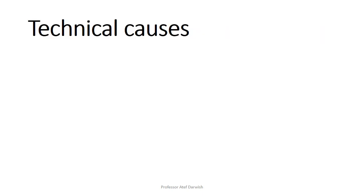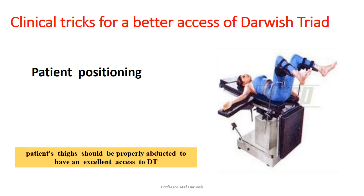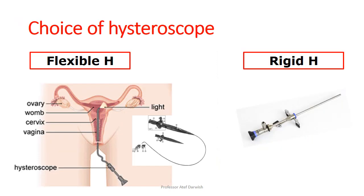Another important issue involves technical causes that may prevent you from reaching the triad. The first is patient positioning. We usually use the dorsal lithotomy position for hysteroscopic examination, but for access to the Darwish triad you should make a little more abduction of the thighs, because you are concentrating on the cornual ends — going on the right side to reach the left cornua and the left side to reach the right cornua. More abduction than usual is needed when focusing on the cornual ends.